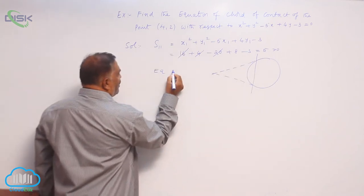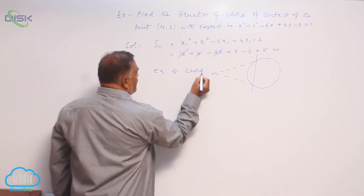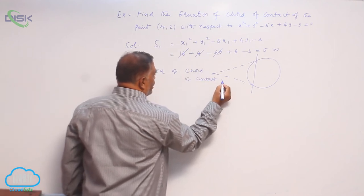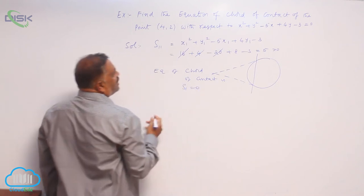So equation of chord of contact is S1 is equal to 0. How to write S1 now?